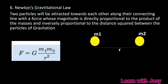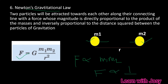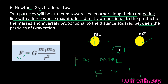Newton's Third Law: For every action, there is an equal and opposite reaction. Newton's Law of Gravitation: Between two particles, there is an attractive force that is directly proportional to the product of their masses M1 and M2, and inversely proportional to the square of the distance R between them.